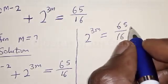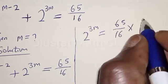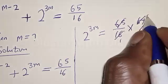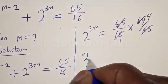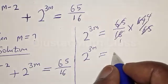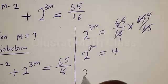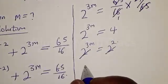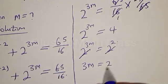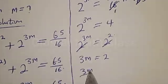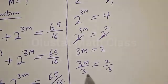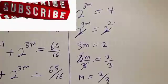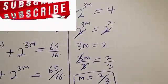To change the division to multiplication, we have 65 divided by 16 times 64 over 65. The 65 cancels, and 64 divided by 16 gives 4. Therefore, 2 raised to the power 3m equals 4, which is 2 squared. Since they have the same base, 3m equals 2. Dividing both sides by 3, m equals 2 over 3.